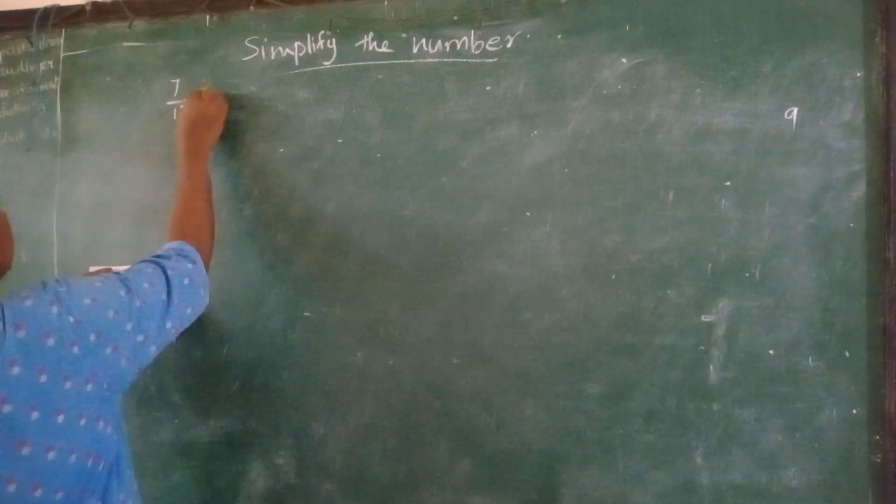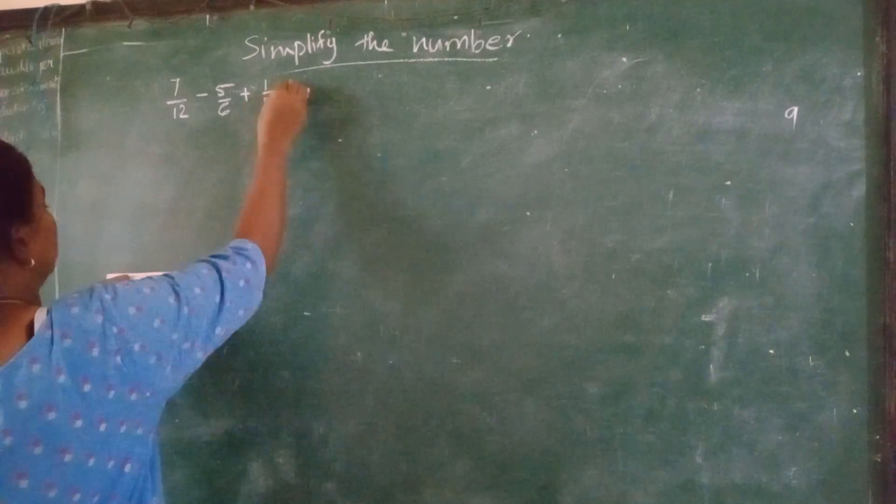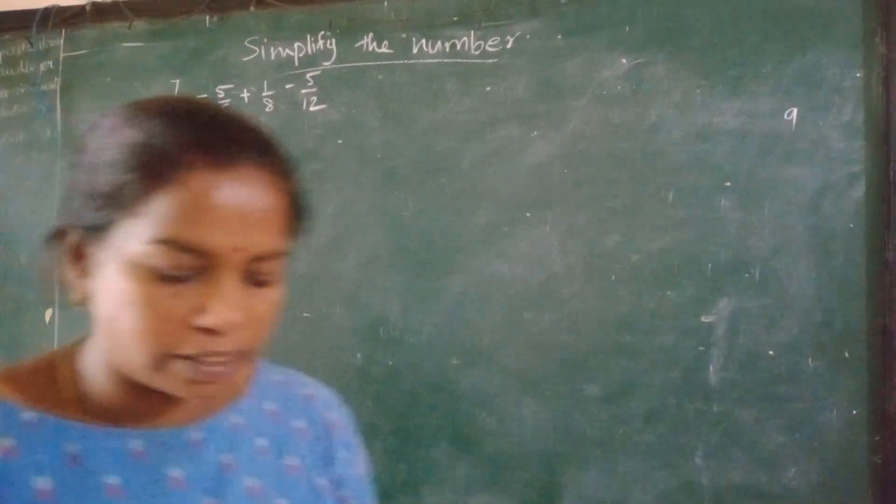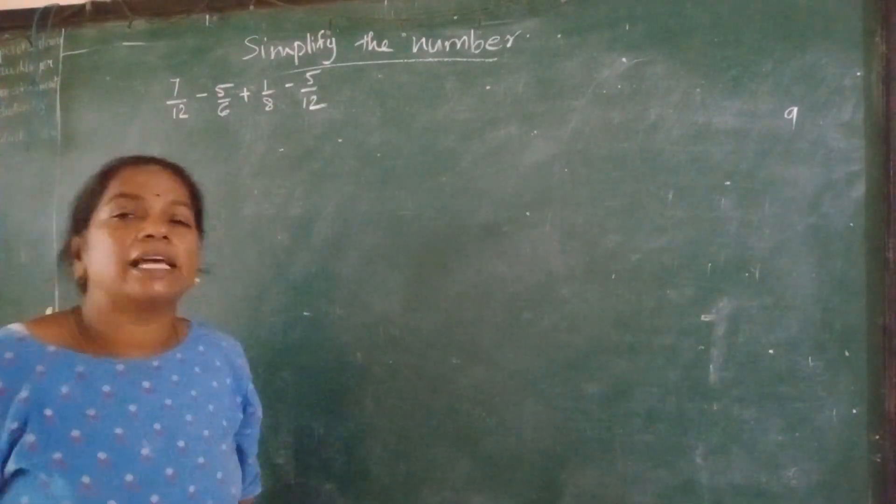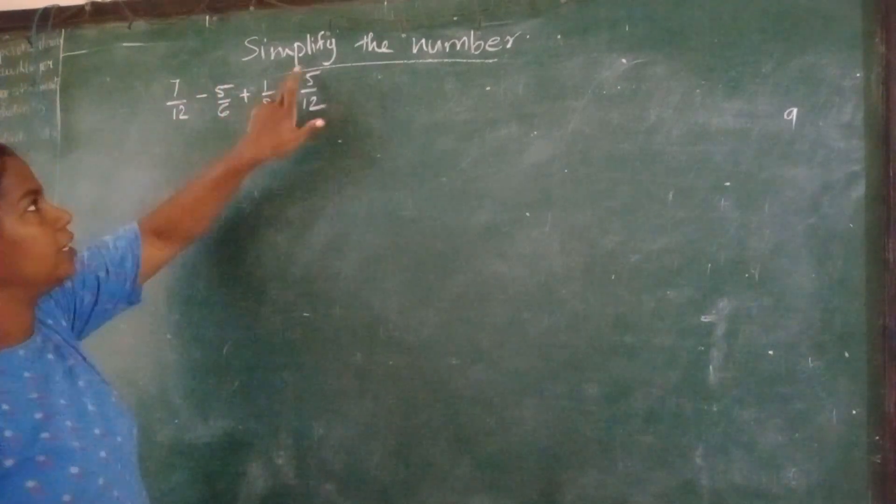7 upon 12 minus 5 upon 6 plus 1 upon 8 minus 5 upon 12. This is the question. Now 7 upon 12, 5 upon 6, 1 upon 8, 5 upon 12.